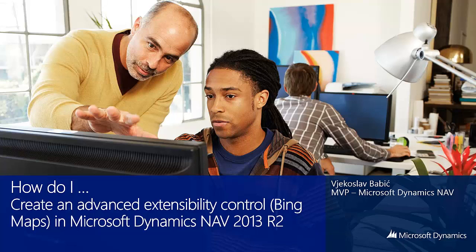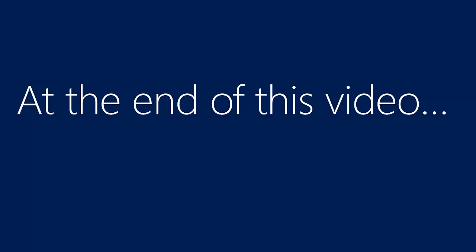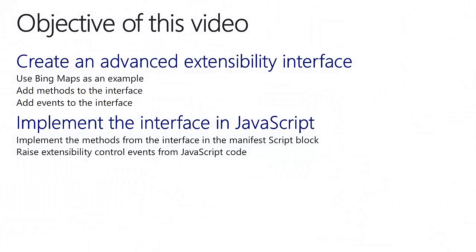If you haven't watched it already, please watch the How Do I Create a Simple Extensibility Control video first. At the end of this video, we'll have Bing Maps Control integrated into a page that works equally for both the Windows and the Web Client. The objective is to show how to create an advanced extensibility interface which uses methods and events, and how to implement this interface in JavaScript.